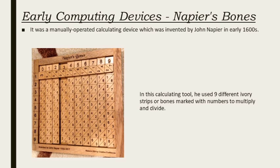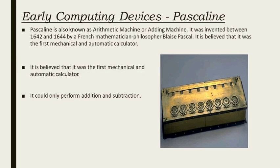In order to use Napier's Bones a person needs to know only how to add and subtract. The next device we are going to talk about is called the Pascaline. Pascaline is also known as the arithmetic machine or adding machine.